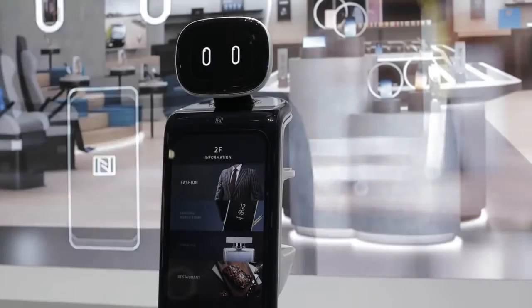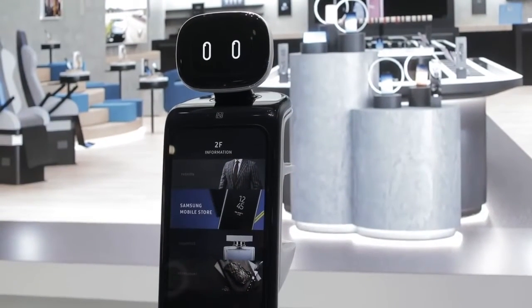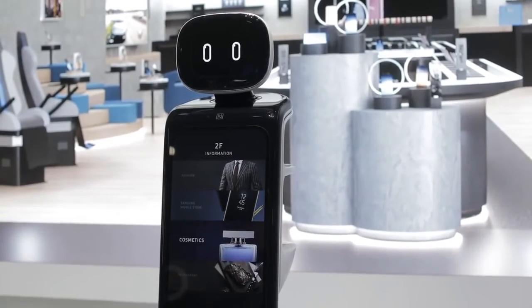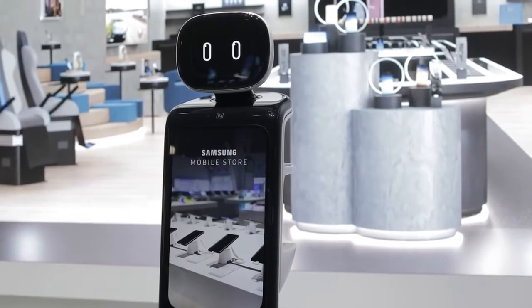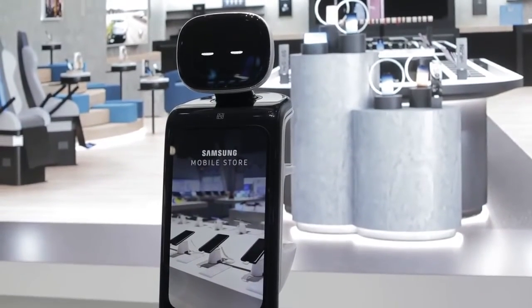Here at CES at the booth, we're showing lots of products and technology. Some of those products are here now today and will be available in the store, and some are future thinking. The robots are definitely one of these future thinking products, not going to be in retail today, but probably sometime in the near future.